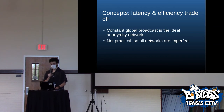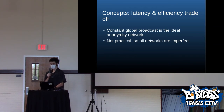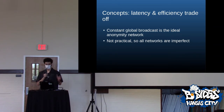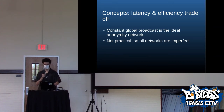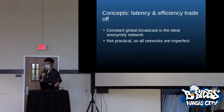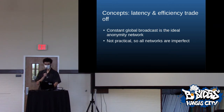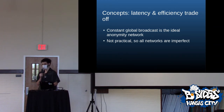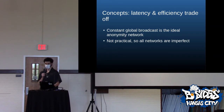Anonymity networks are really hard to develop because the biggest set of users you could be part of to anonymize yourself would just be everybody — imagine every device connected to a global satellite broadcast network. That would be insanely inefficient. So that makes all anonymity networks imperfect, because they can't just broadcast to everyone all the time.